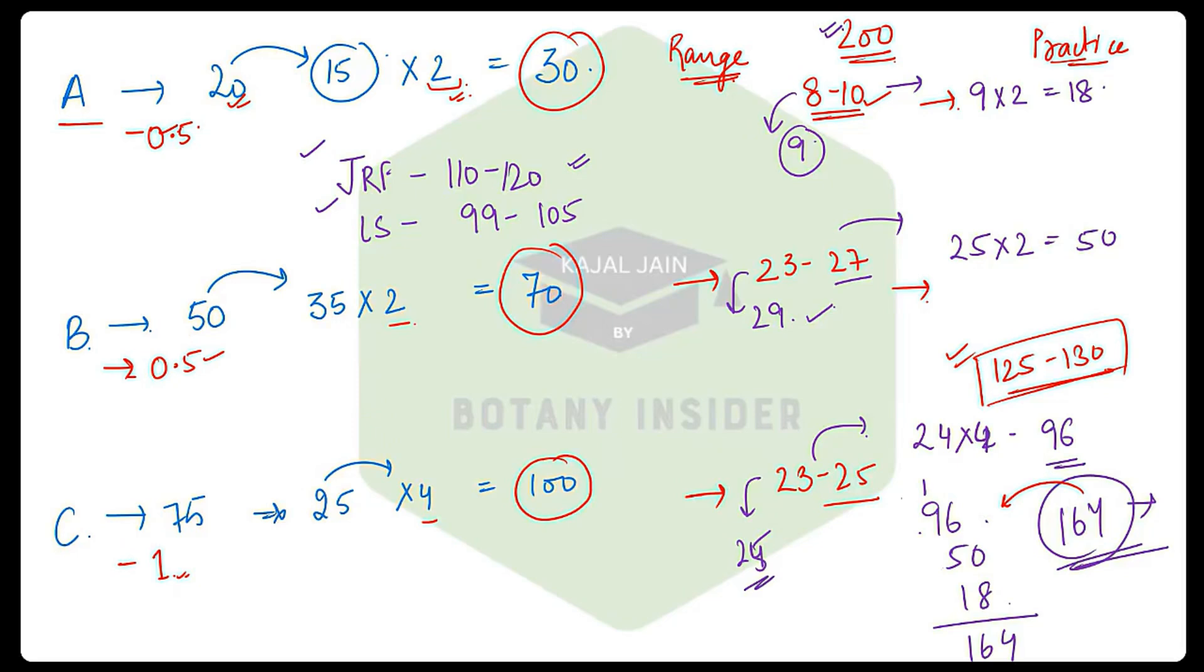For scoring a final 130, you should be solving the paper with an additional 30 to 40 marks, so that if you get some questions wrong, you will still be able to qualify the examination.